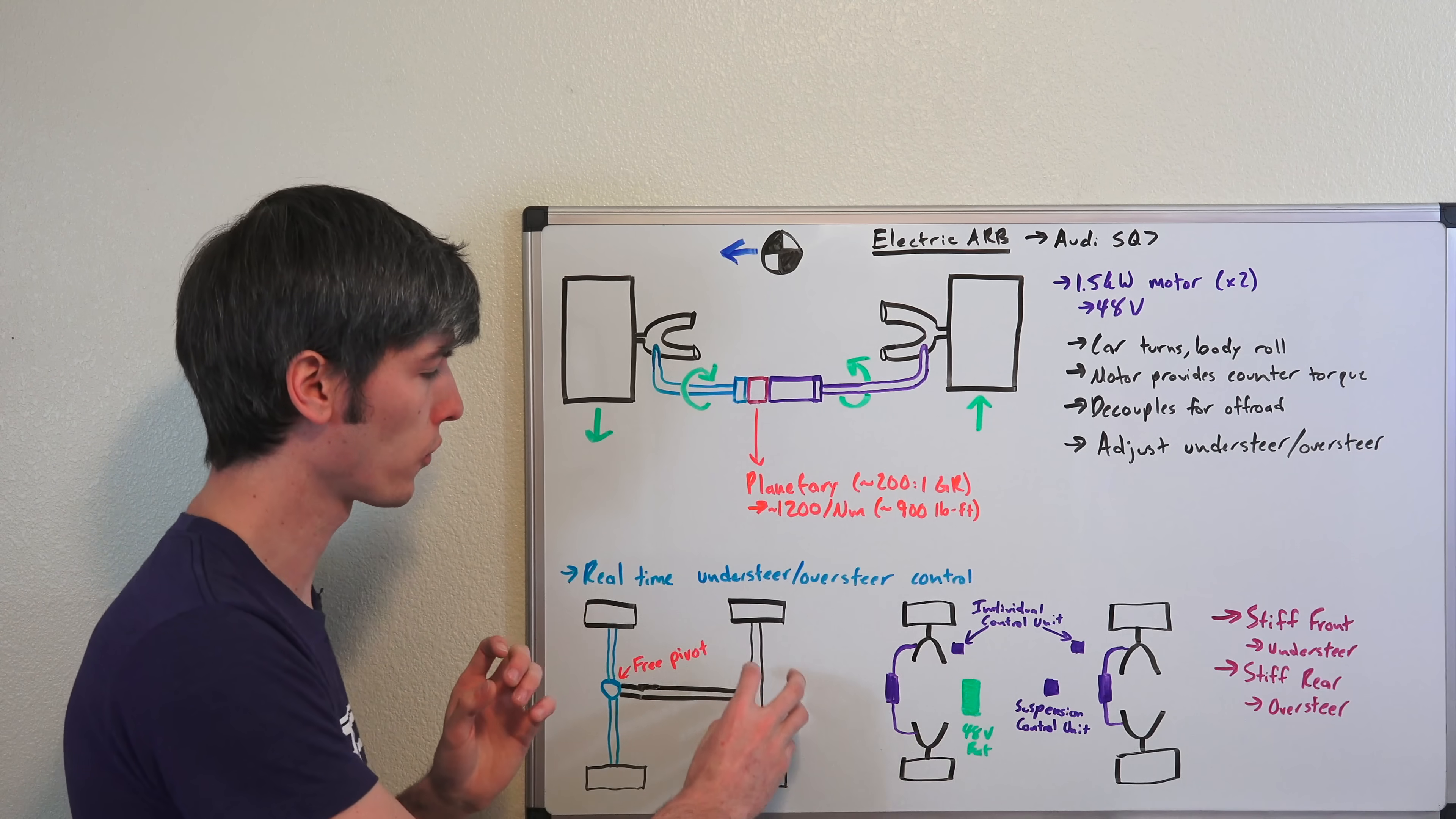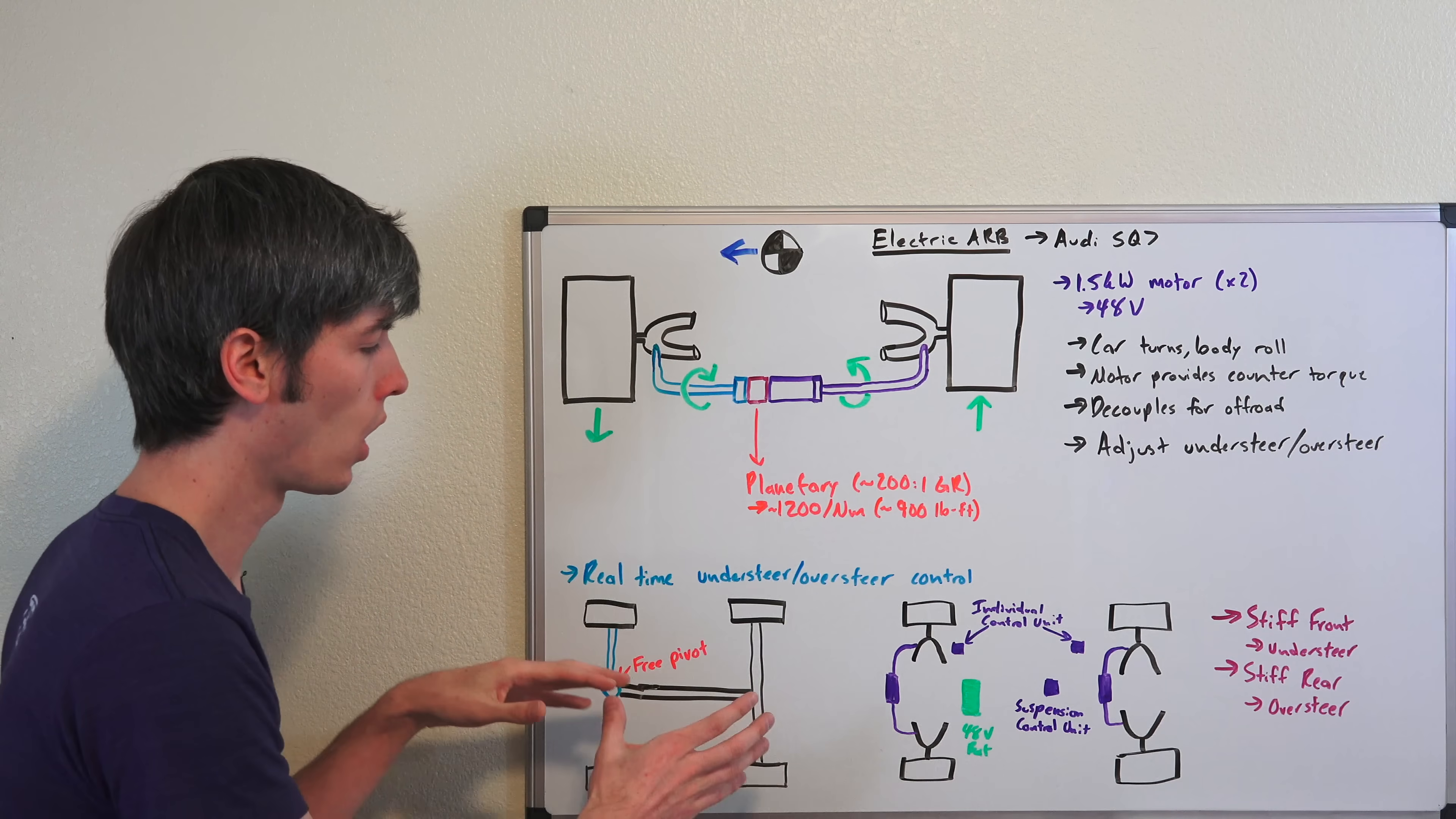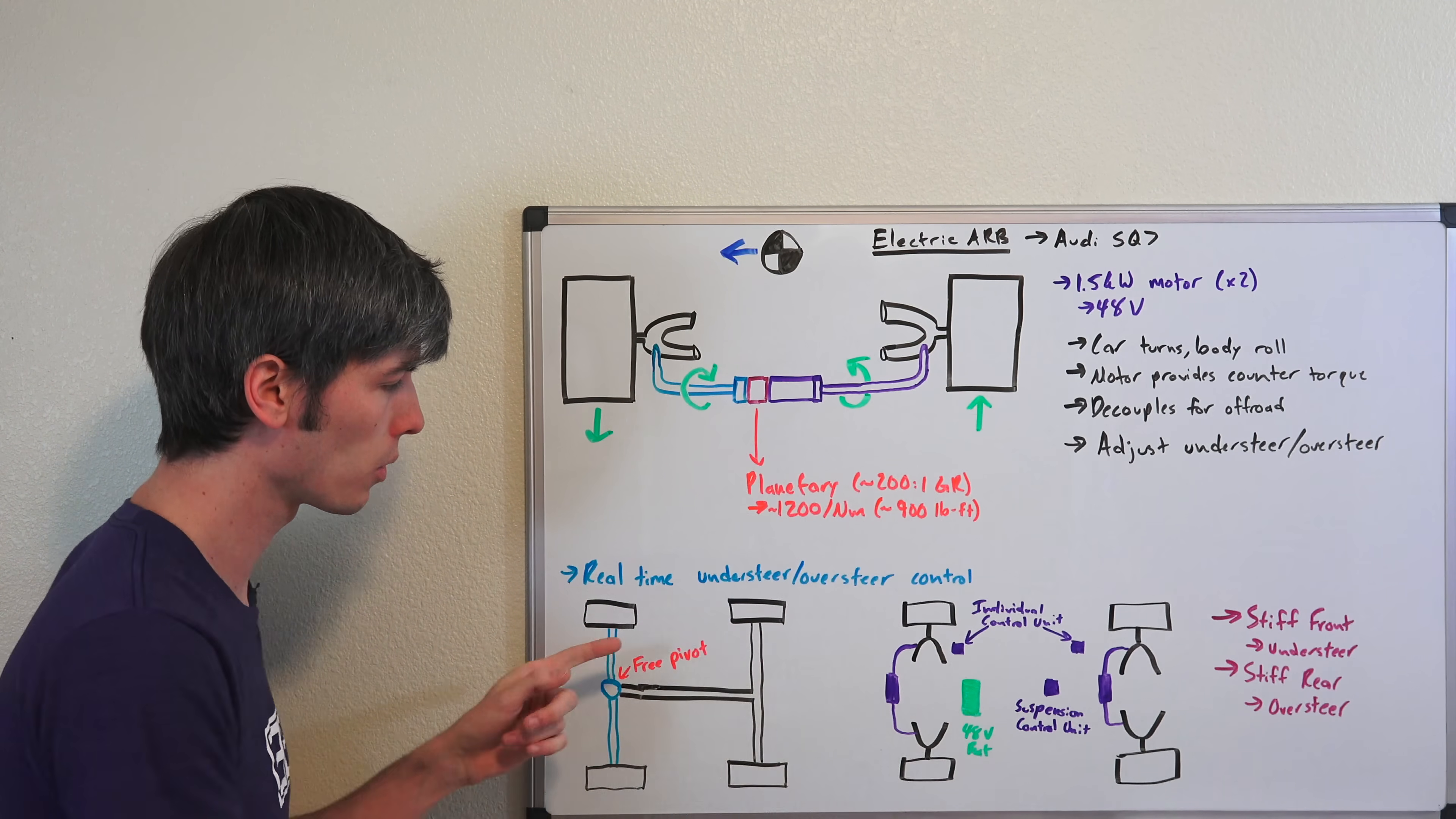For example, if you had a front anti-roll bar which was infinitely stiff and a free-pivoting rear axle that can simply rotate about that rear point, as you go around a corner, all of that load is going to transfer to that front left tire because it's rigid. The car wants to lean but can't, even though the rear pivots, because the front is completely rigid.